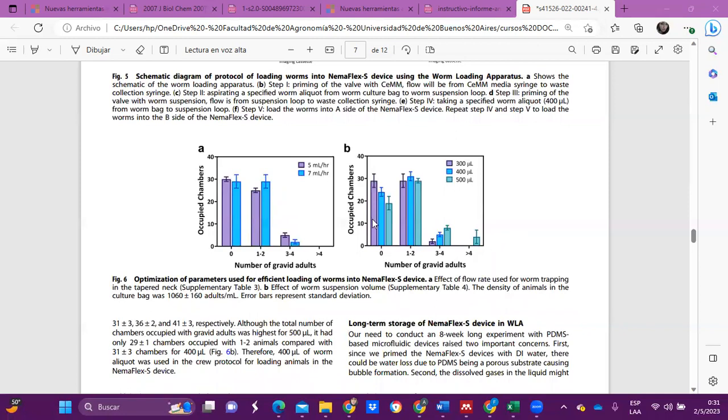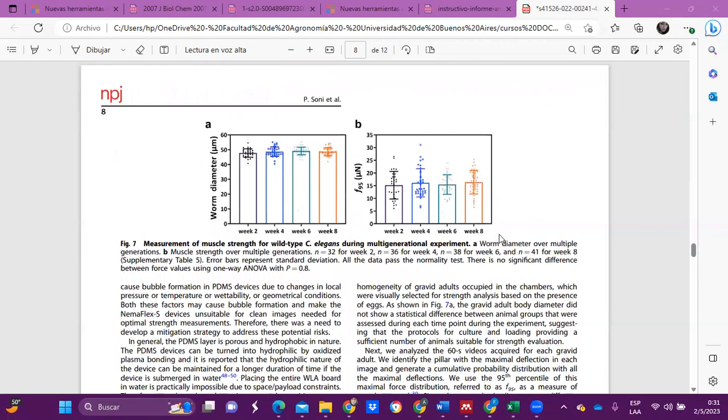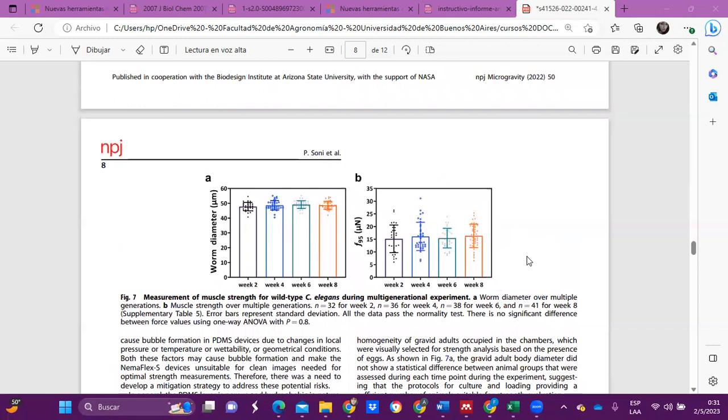Finally, they did ground testing of the microfluidics integrated hardware. The objective of the ground testing was to demonstrate the capability to implement a multi-generational culture loading protocol, imaging session, and analysis of the videos. This figure shows the results of this ground study. The gravid adults' body diameter did not show a statistical difference between animal groups that were assessed during the experiment, suggesting that the protocols for culture and loading provide a specific number of animals suitable for strain evaluation.